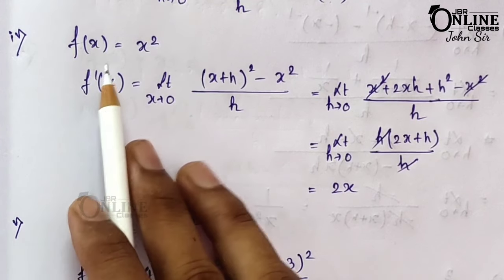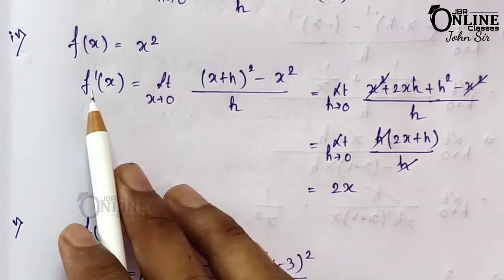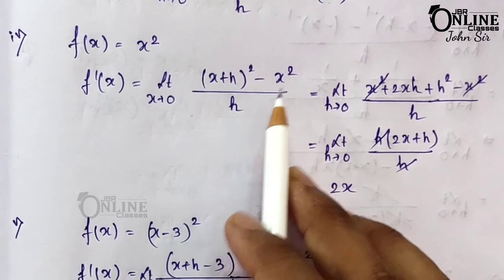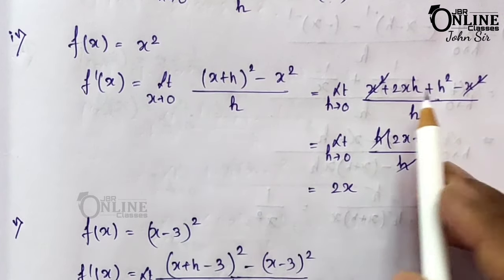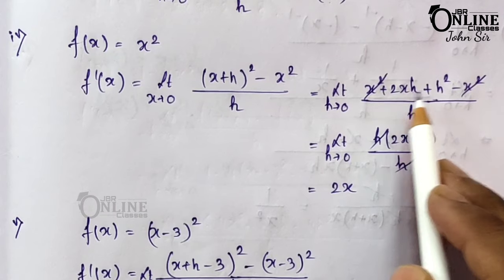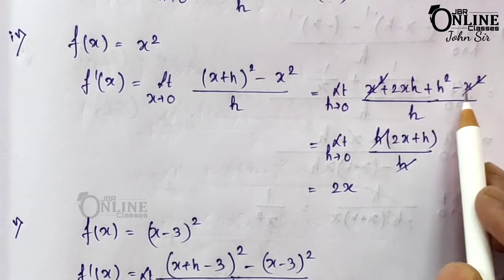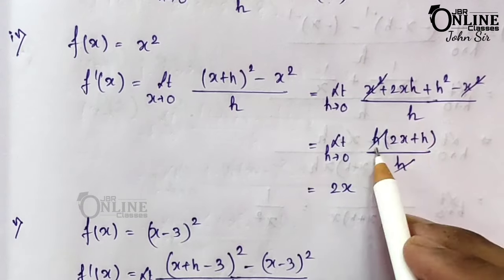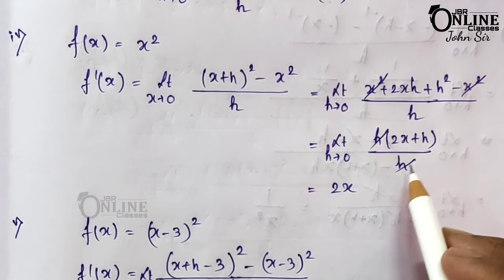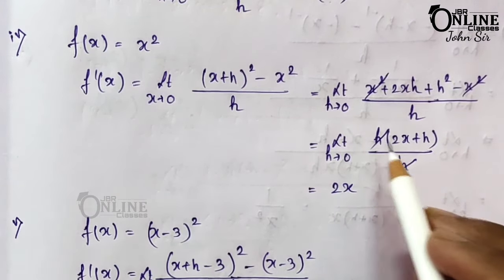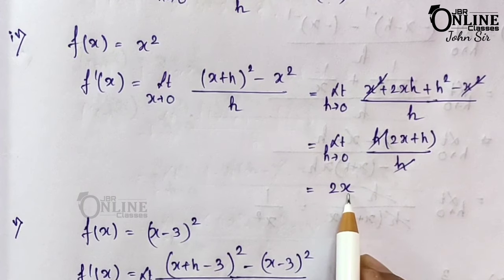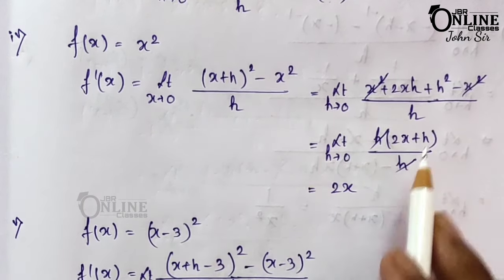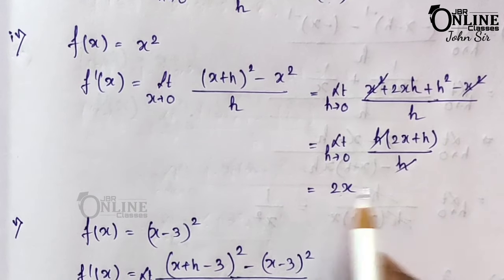Fourth: f(x) = x². So f'(x) = limit h→0 of [(x+h)² - x²] / h. By the formula: [x² + 2xh + h² - x²] / h = [2xh + h²] / h = 2x + h. Substituting h→0: 2x + 0 = 2x.